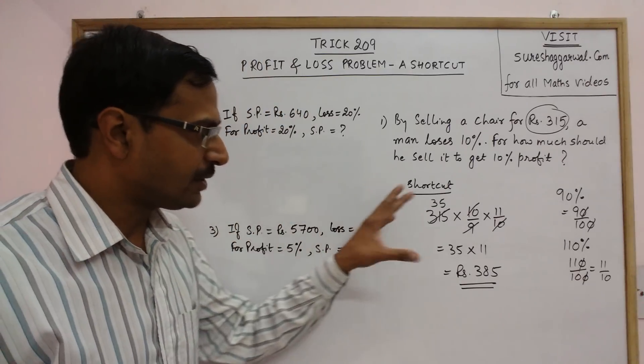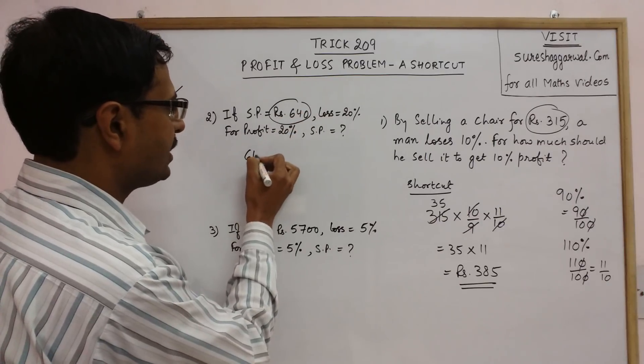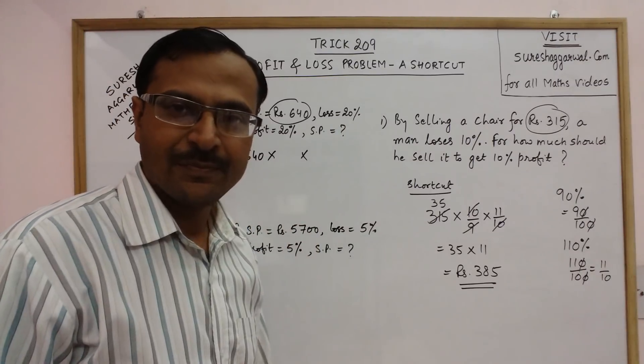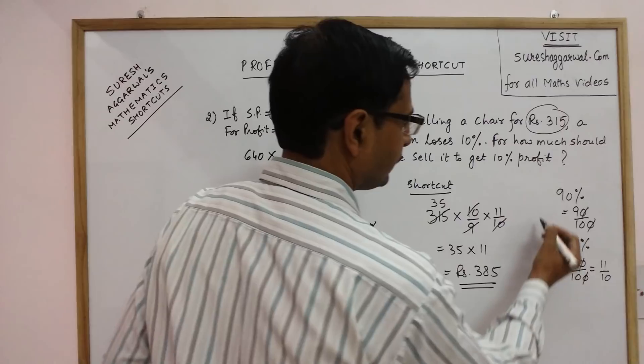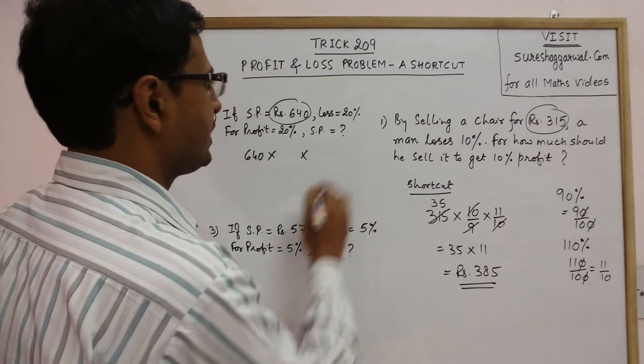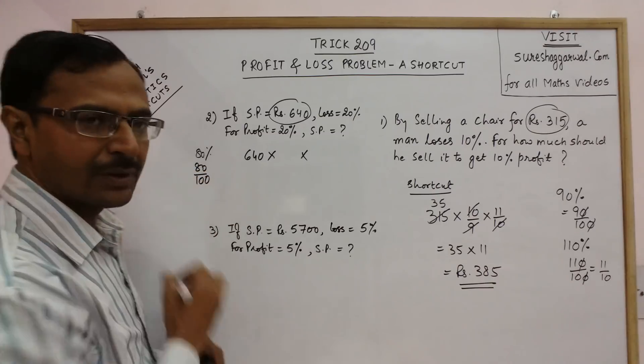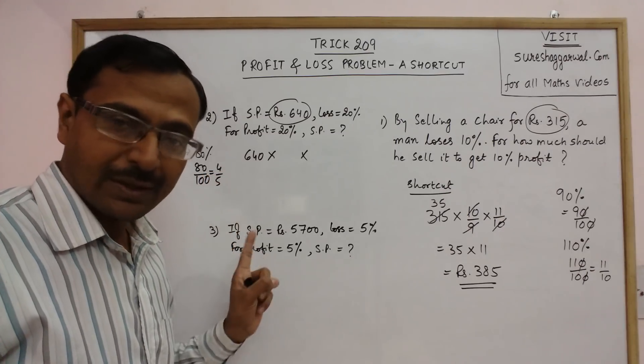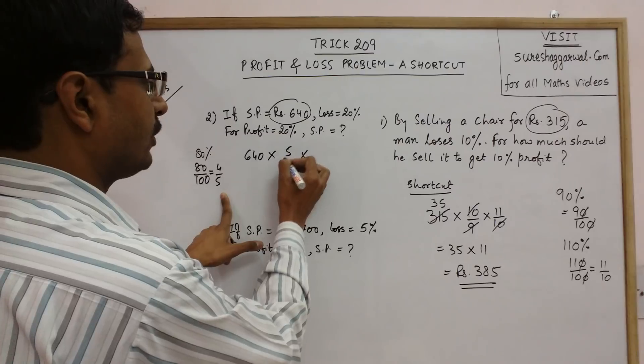Let us implement this method for the second question. The quantity is 640 here. This is loss of 20%, so 100 minus 20 gives 80%. What is 80%? It is 80 upon 100, which reduces to 4 upon 5. For loss we write the reciprocal, so 5 upon 4.